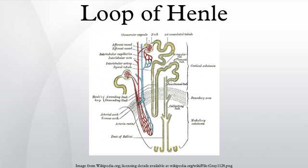In the kidney, the loop of Henle is the portion of a nephron that leads from the proximal convoluted tubule to the distal convoluted tubule.